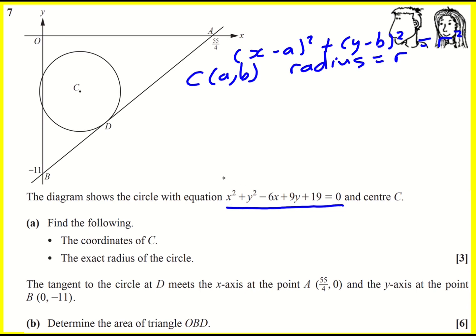Now I can rewrite this as x squared minus 6x plus y squared plus 9y plus 19 equals 0, and then complete the square.